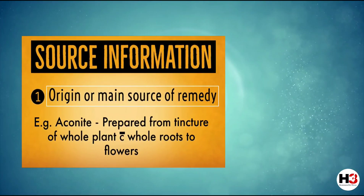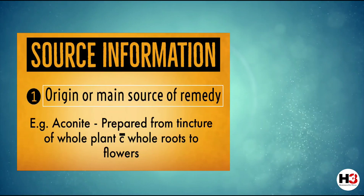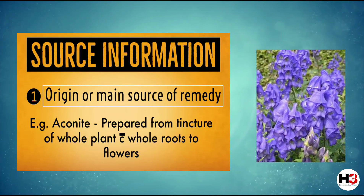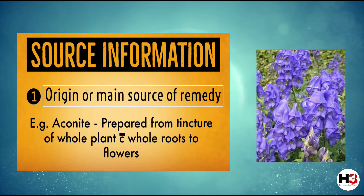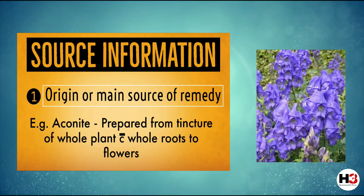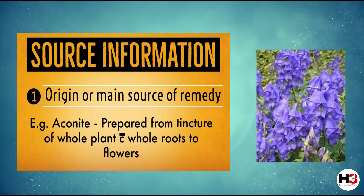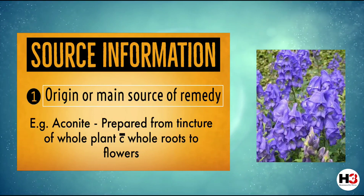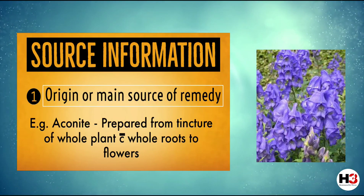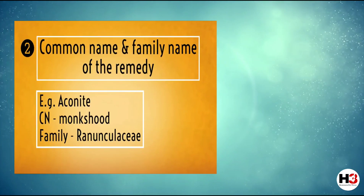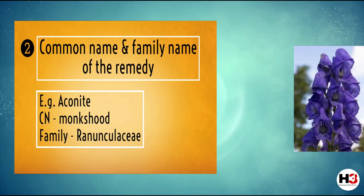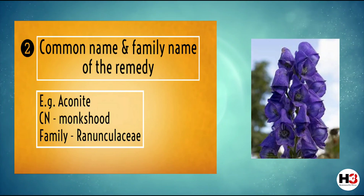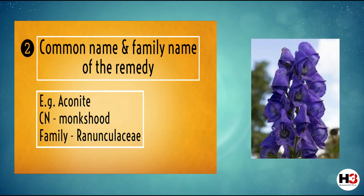The source information of any homeopathic remedy involves several points. The first is the origin or the main source of a particular remedy — for example, Aconite is prepared from the tincture of the whole plant including the roots when the plant begins to flower. The next important point is the common name of that remedy and also the family or kingdom to which it belongs — for example, Aconite's common name is Monkshood and it belongs to the family Ranunculaceae.